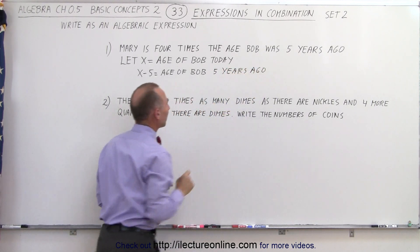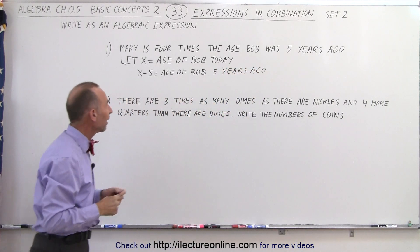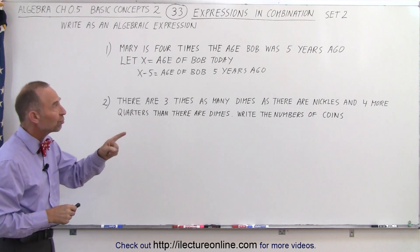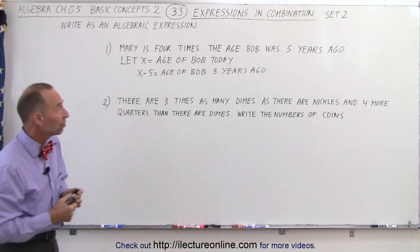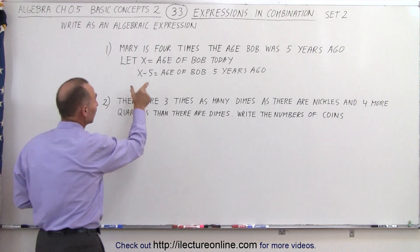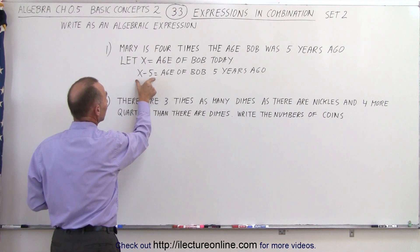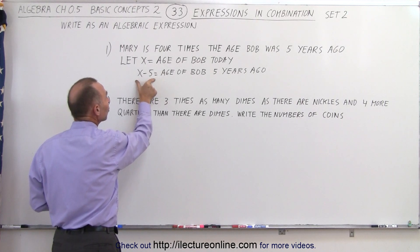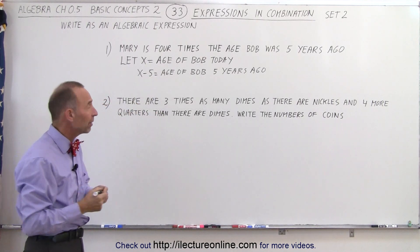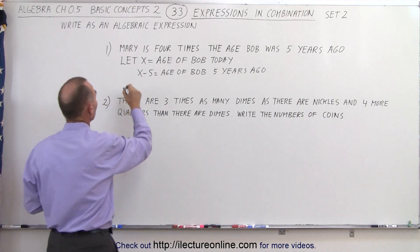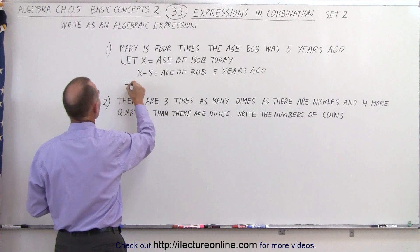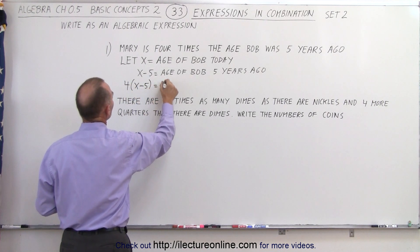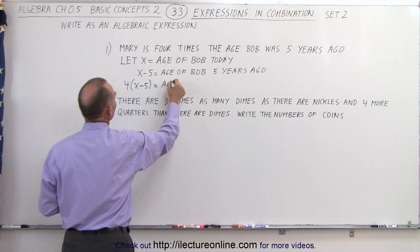Now we can compare Mary's age to that. It says that Mary is four times the age Bob was five years ago, and this is the age that Bob was five years ago, so four times x minus five equals the current age of Mary.